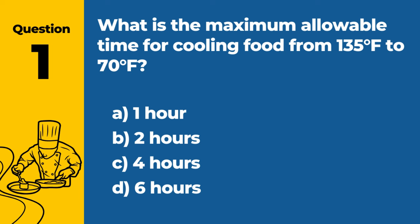Question 1: What is the maximum allowable time for cooling food from 135°F to 70°F? A. One hour. B. Two hours. C. Four hours. D. Six hours. Answer: B. Two hours. The maximum allowable time for cooling food from 135°F to 70°F is two hours, as part of the overall six-hour cooling requirement to reach 41°F or lower.